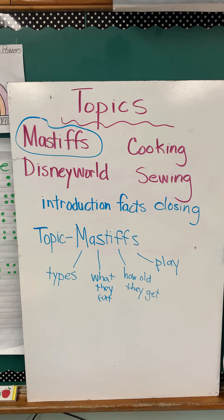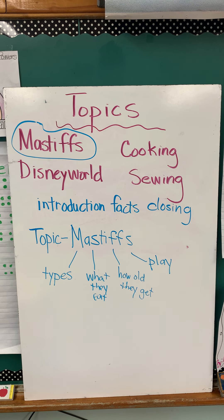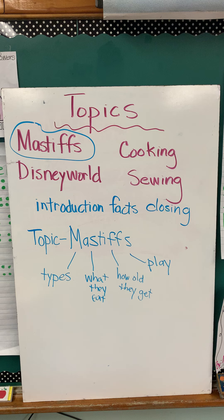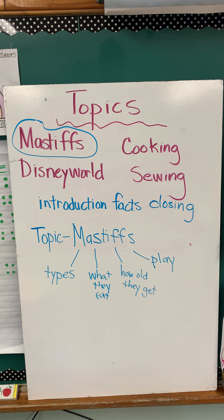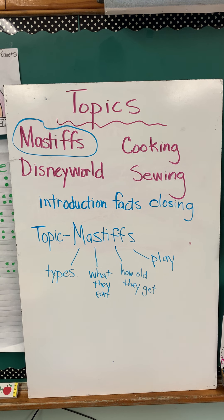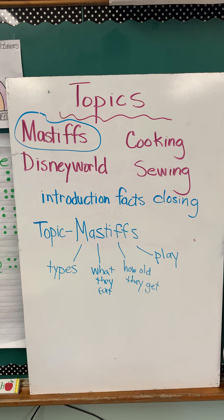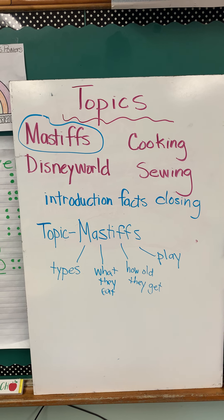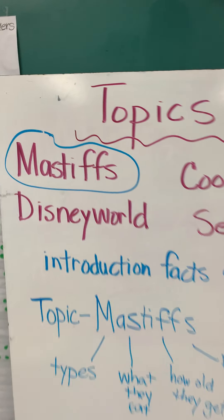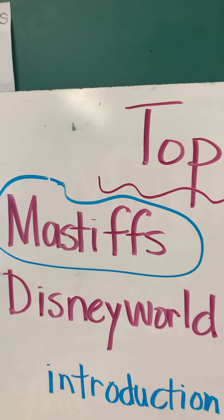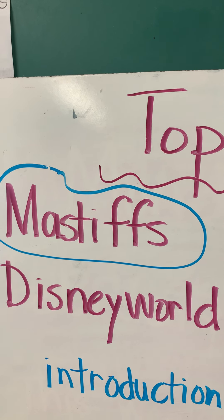You need to make a list of topics. For example, I chose things that I know about: mastiffs, Disney World, cooking, sewing. After I made a list of things that I know, I decided to write about just one of those topics, and I chose mastiffs because I've had a lot of mastiff dogs.